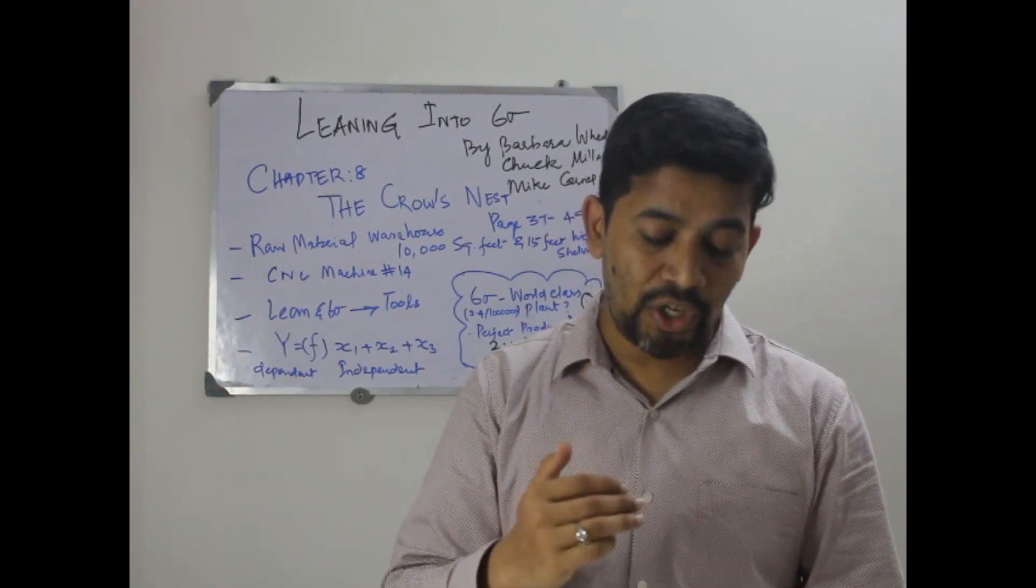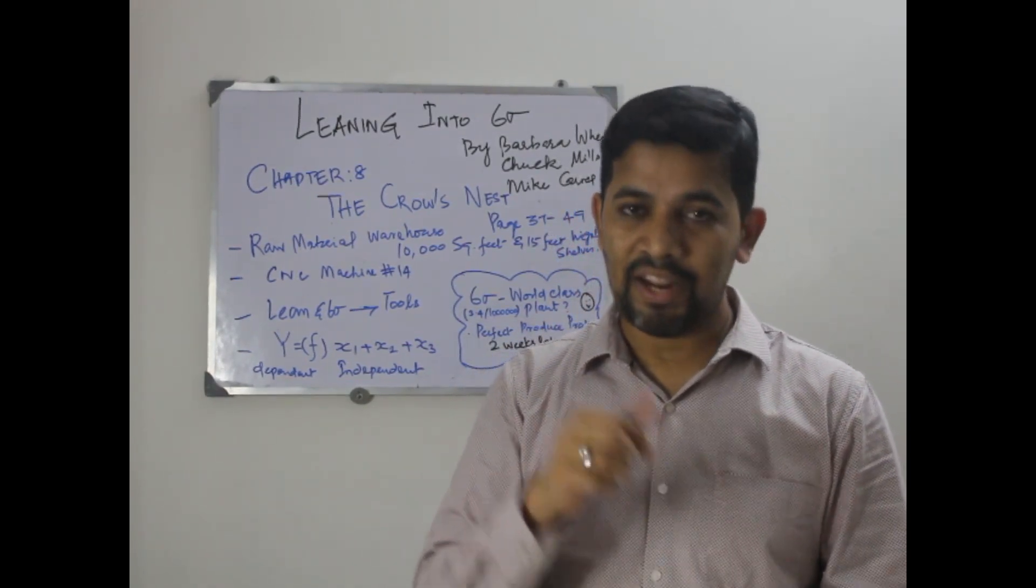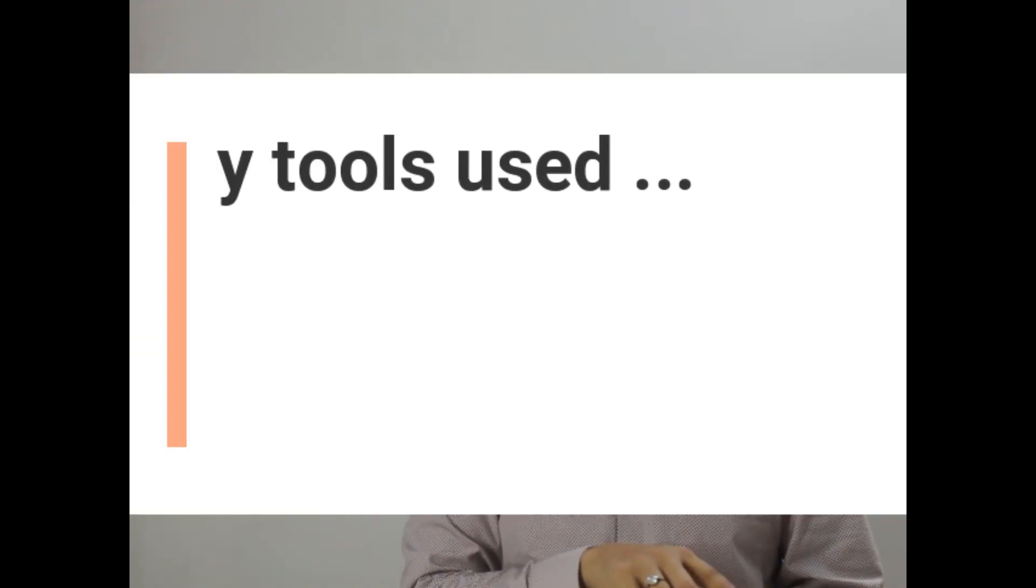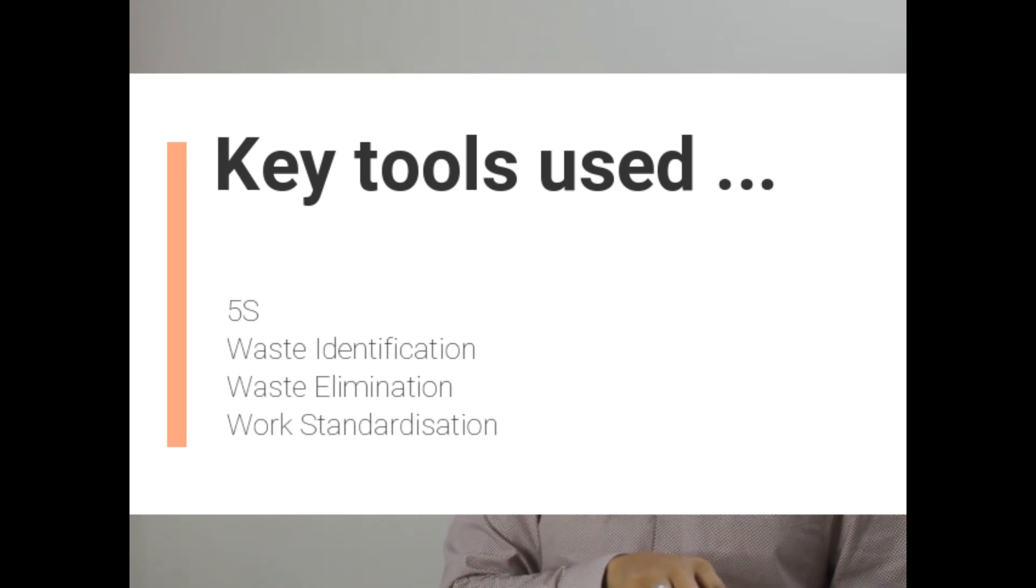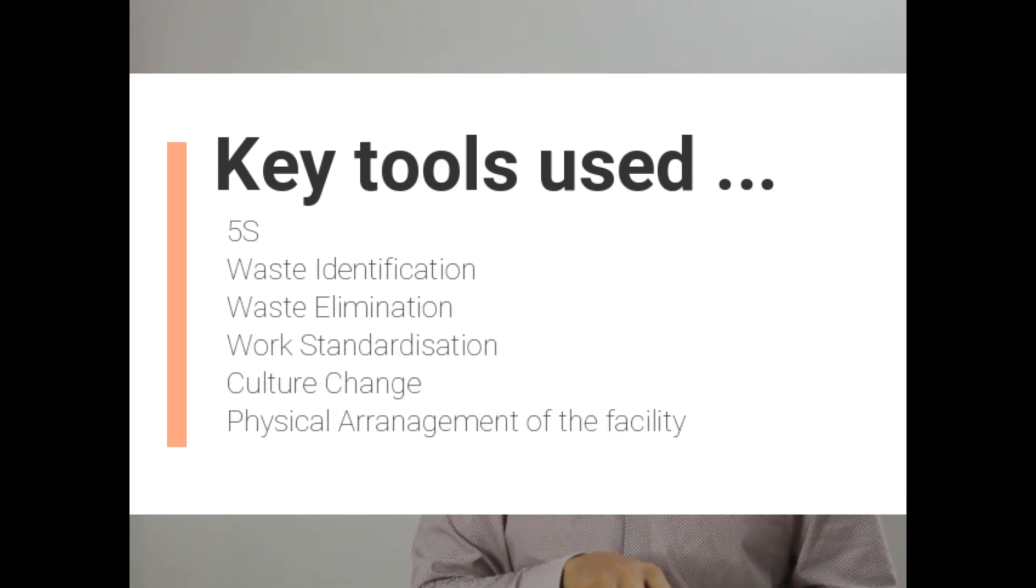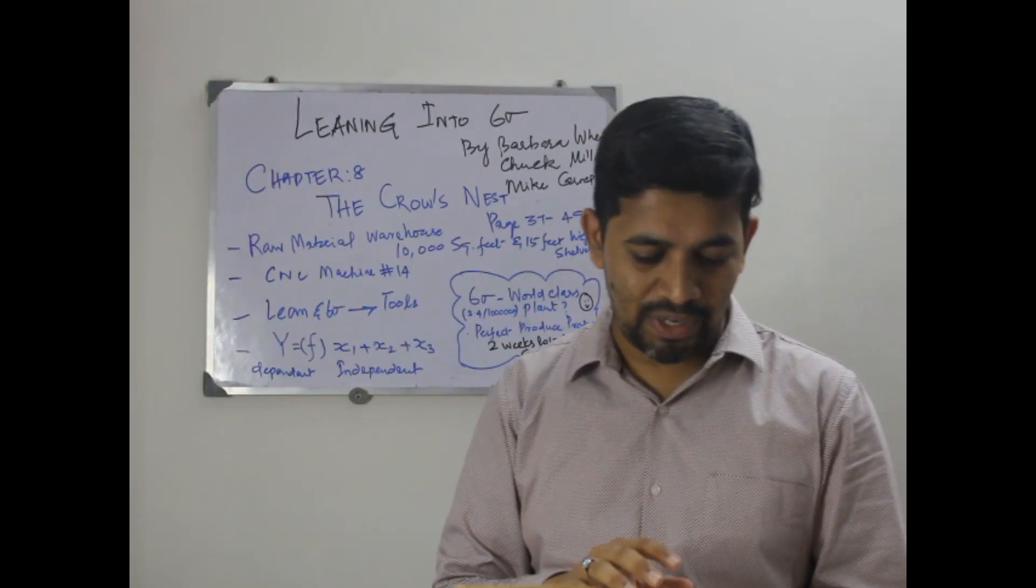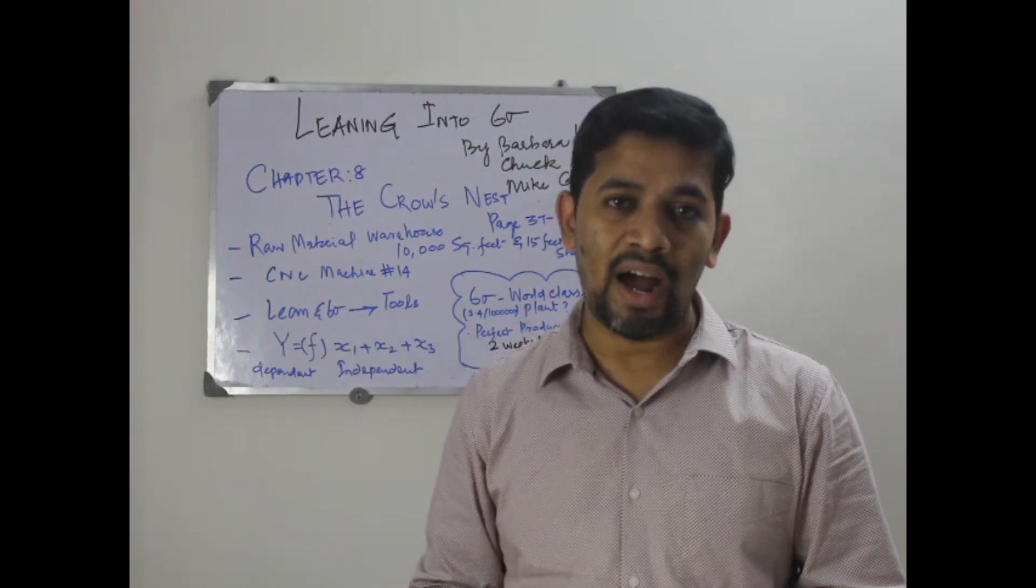That's why Lean Six Sigma comes in. Lean addresses continuous improvement like 5S, waste identification, waste elimination, workplace organization, vendor relationships, visual factories, error proofing, process standardization, culture change, and physical arrangement of the facility. All of that promotes and ensures efficient flow of information and efficient throughput throughout the organization.